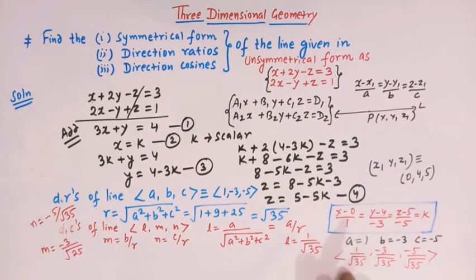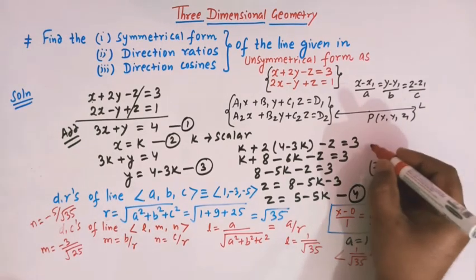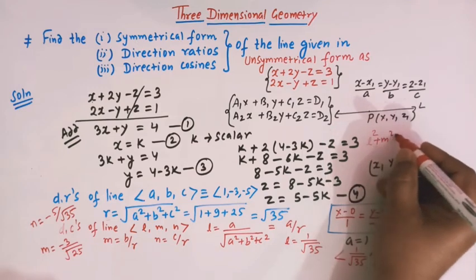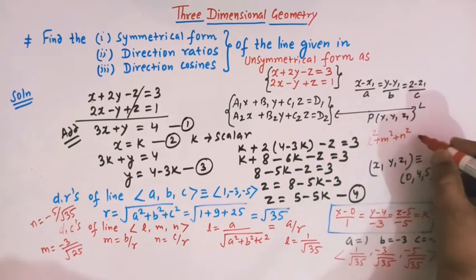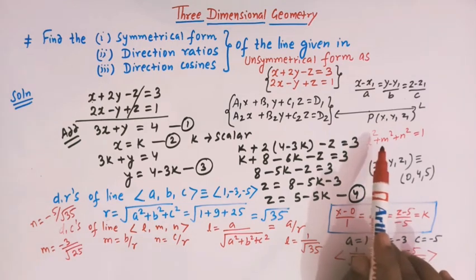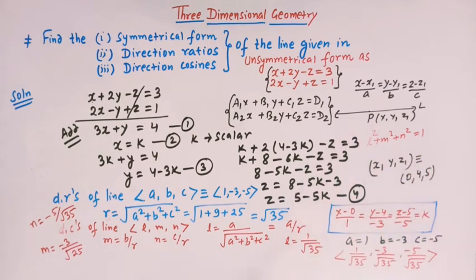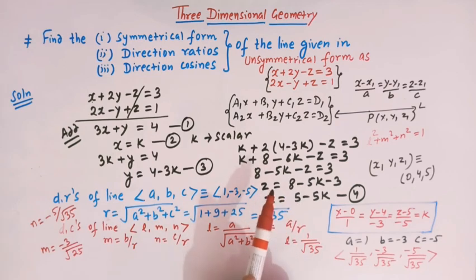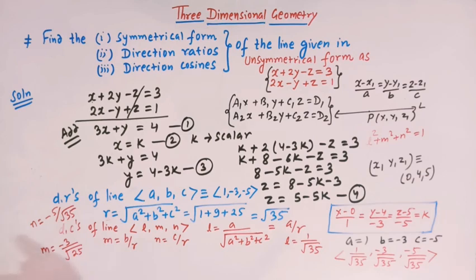In this lecture, we have seen how to convert the unsymmetrical form of a line into symmetrical form and how to find the direction ratios and direction cosines of the given line.